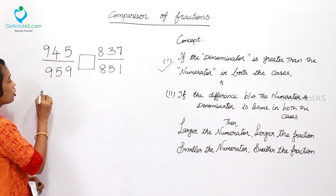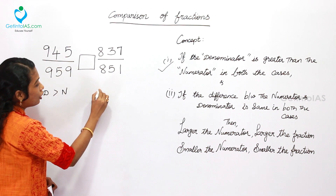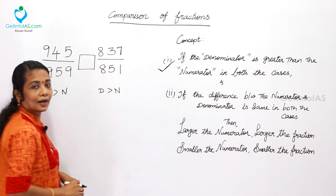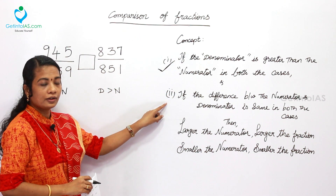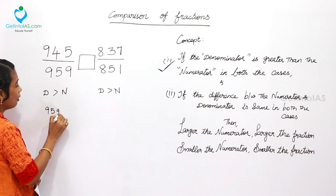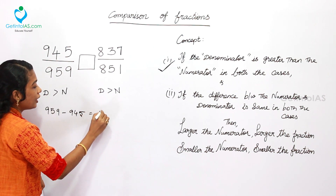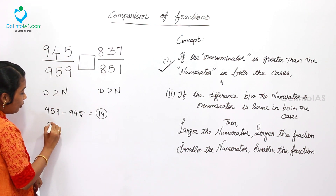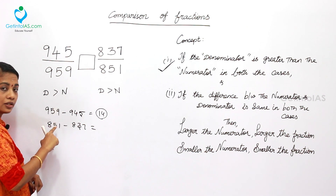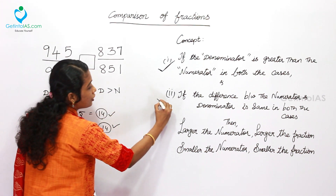Checking the first condition: the denominator is greater than the numerator in both cases — satisfied. Now the second condition: 959 minus 945 gives a difference of 14. Similarly, 851 minus 837 also gives a difference of 14. The differences are the same, so the second condition is also satisfied.